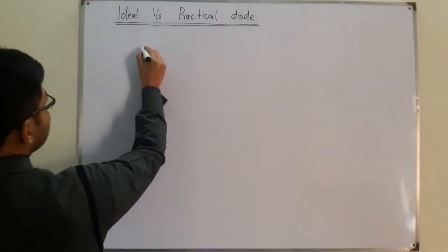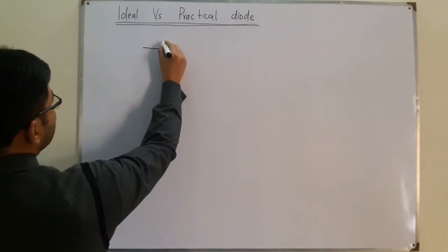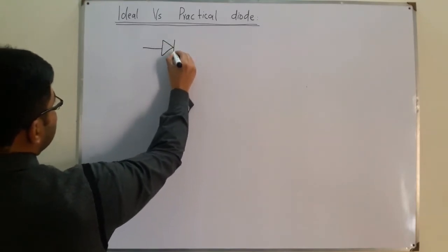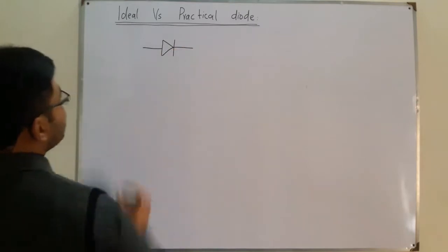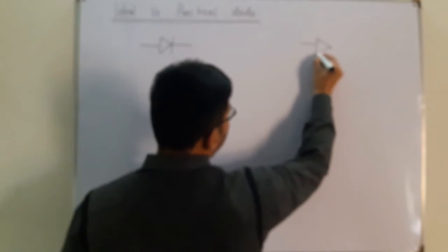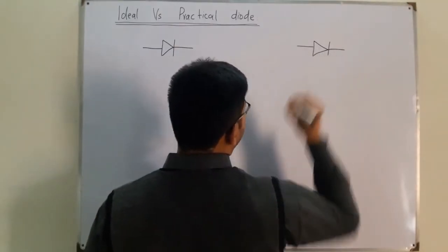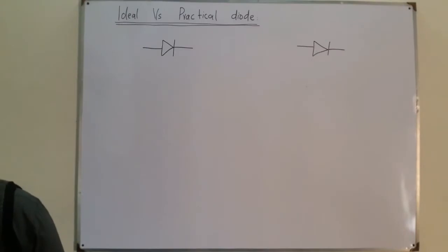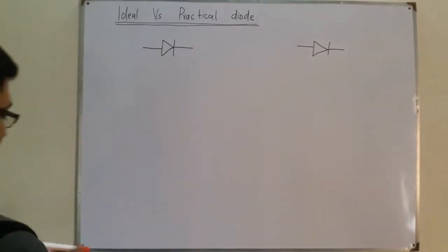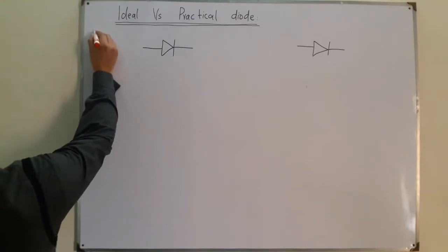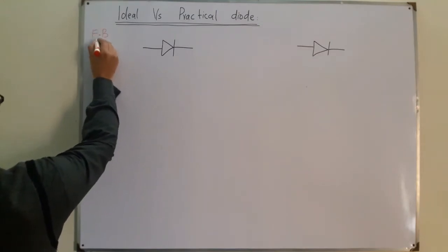Let me draw the diode symbol. This is the P side of the diode, represented like this, then we have the depletion layer, and then we have the N side. Let me draw another one over here. Now let's consider the forward bias and the reverse bias conditions.